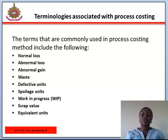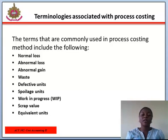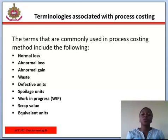Equivalent units refers to a conversion of partly completed units into an equivalent number of wholly completed units. For example, if 1,000 cars are 40% complete, the equivalent number of completed cars would be 1,000 × 40% = 400 cars. And if 1,000 cars are 60% complete on the painting but 40% complete on the testing, the equivalent units would need to be established for each type of cost.